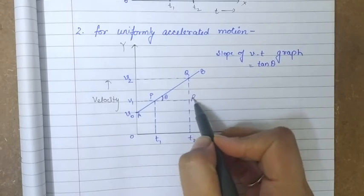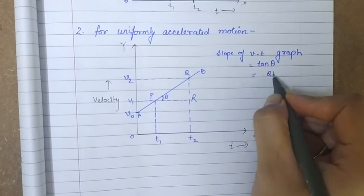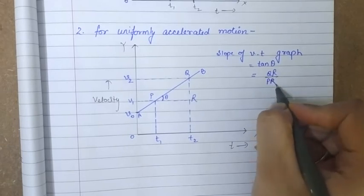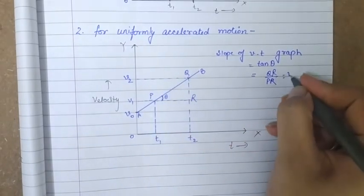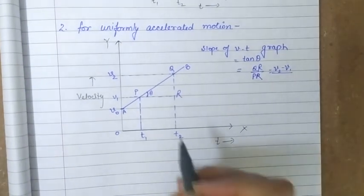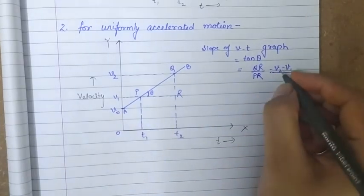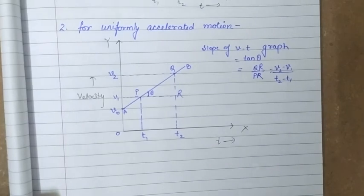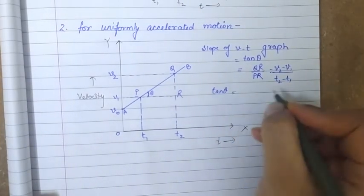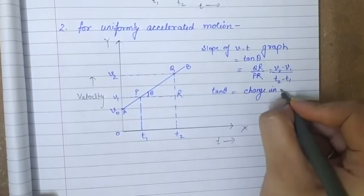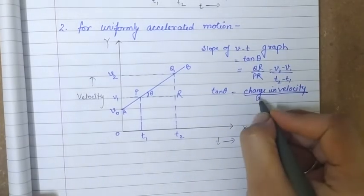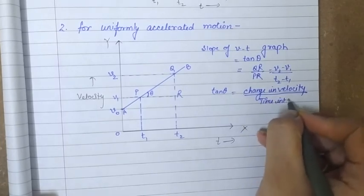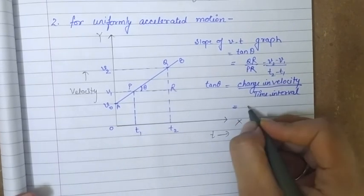To find tan theta, we use the right triangle with vertex R. Tan theta equals QR over PR — perpendicular over base. QR is v2 minus v1, and PR is t2 minus t1. So the slope equals the change in velocity divided by the time interval, and change in velocity upon time interval represents acceleration.